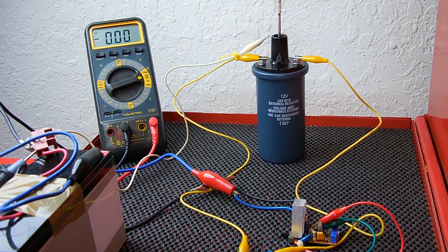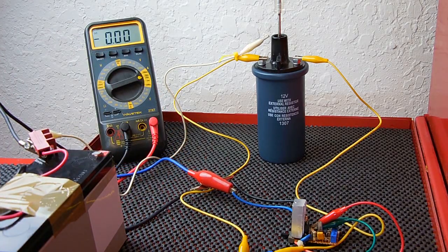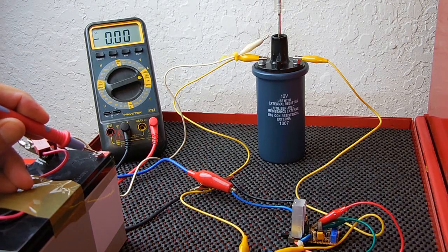Let's see how much current the circuit draws. Let's switch this over to here. 20 amp—connect this in series and let's see what kind of current we're drawing. Here we go. Around 4.5 to 5 amps.